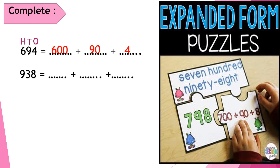Number 2: 938. We have 9 in 100s, 3 in 10s, and 8 in 1s. To write this in expanded form, we put two zeros to the number in the 100s, one zero to the number in the 10s, and no zeros to the number in the 1s. Then 938 equals 900 plus 30 plus 8.